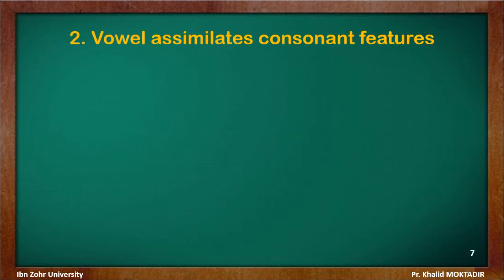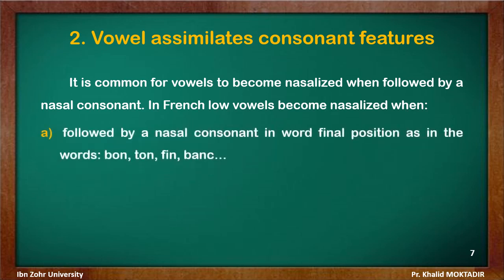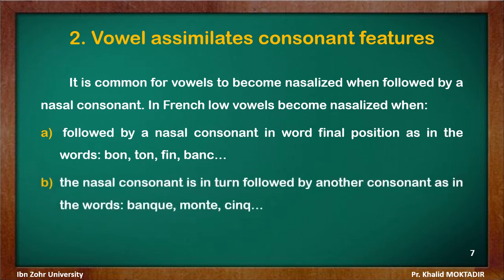Now we turn to how a vowel assimilates consonant features. It is common for vowels to become nasalized — pronounced through the nasal cavity — when followed by a nasal consonant. In French, low vowels become nasalized when followed by a nasal consonant in word-final position, as in the words bon, ton, fin, bon.